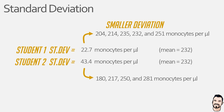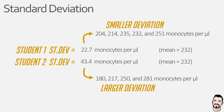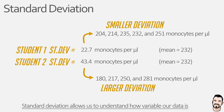On the flip side, the cell counts for the second student in our second example are further from the mean, resulting in a higher standard deviation value, which essentially means the data values in the data set are more dispersed. And essentially, when used in conjunction with the mean, the standard deviation allows us to see how spread out and variable our data is, and that is because it relates directly to the bell-shaped curve we saw earlier.